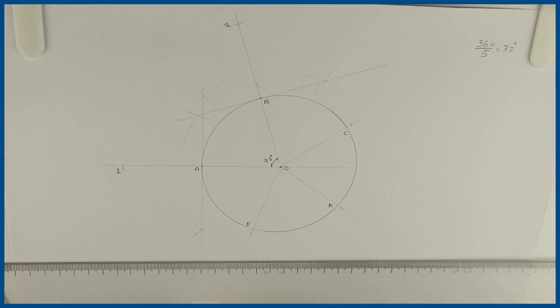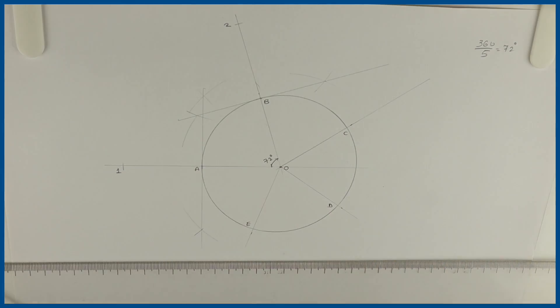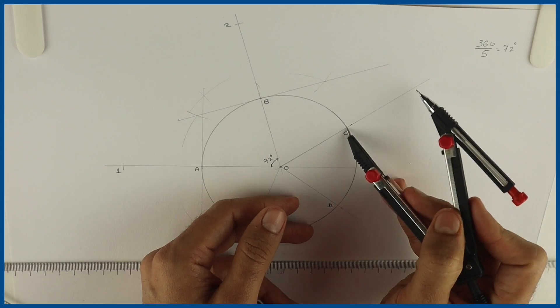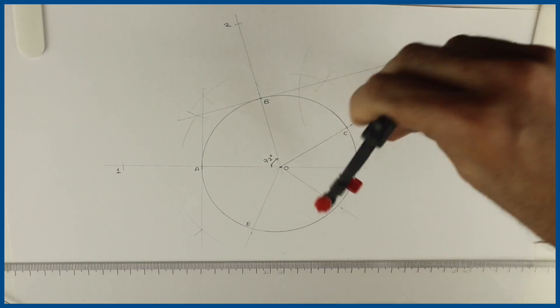Same with C. O to C. Extend the line. That will be O3. Then bisect O3.